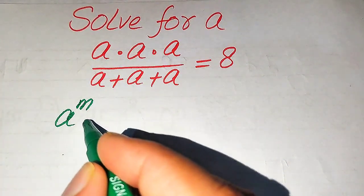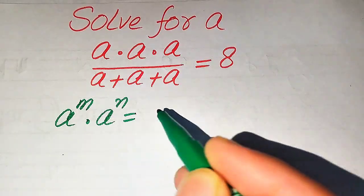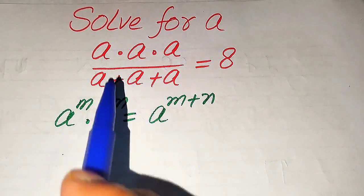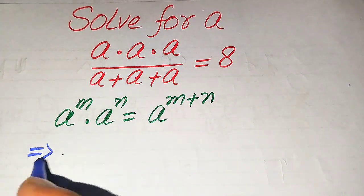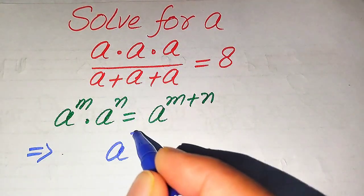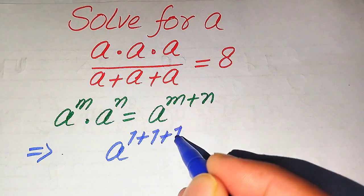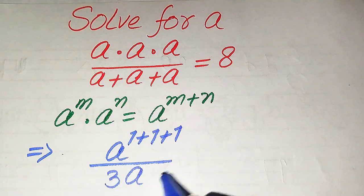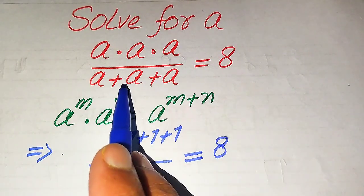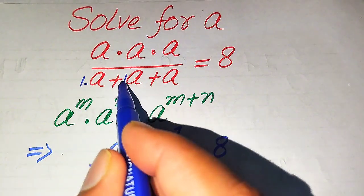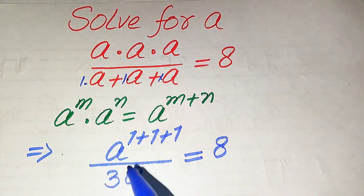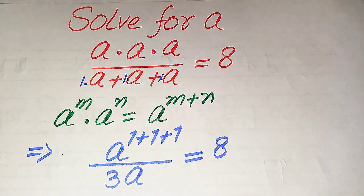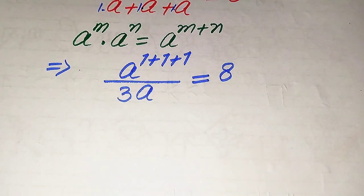We use the exponent rule: a to the power of m multiplied by a to the power of n equals a to the power of m plus n. Since these three terms are multiplied, we add the exponents, giving a to the power of 1 plus 1 plus 1. In the denominator, a plus a plus a becomes 3a, since the coefficients are all 1, summing to 3.